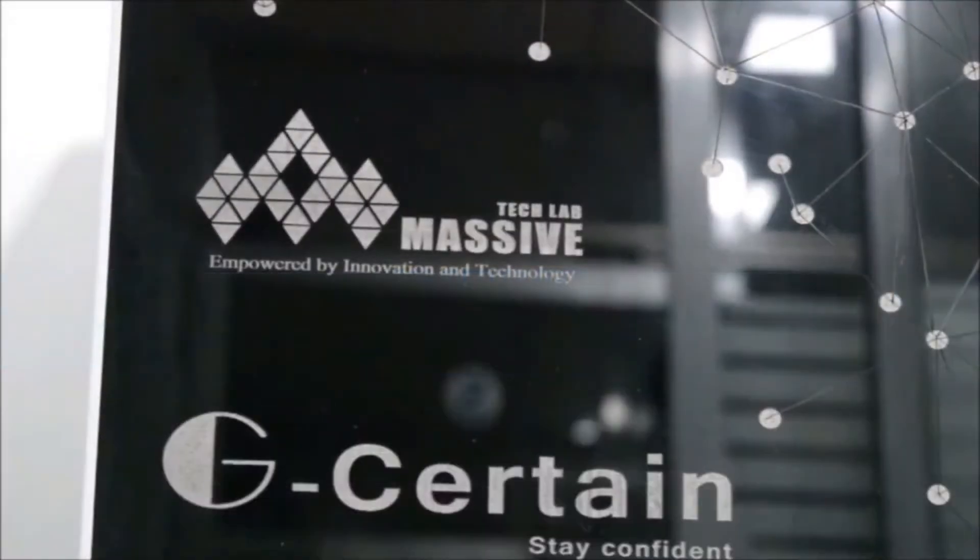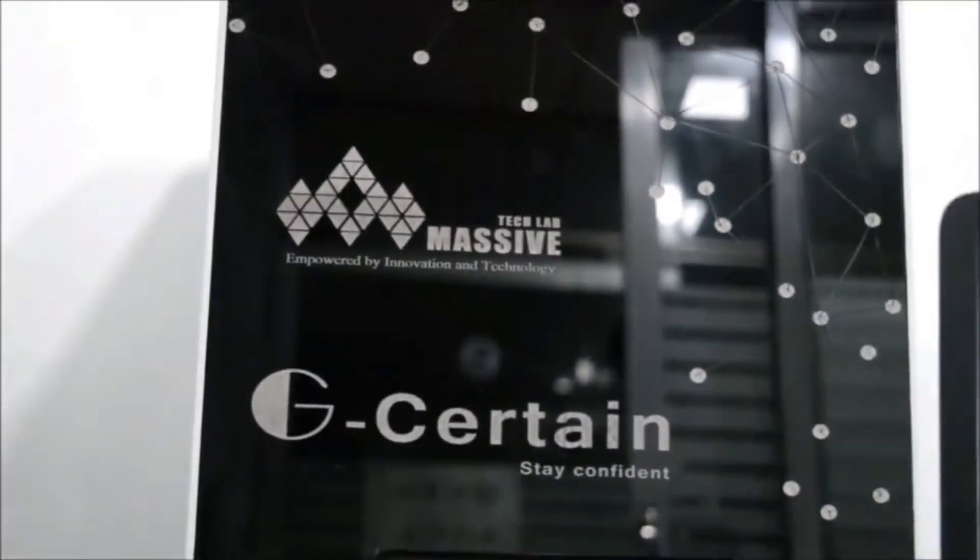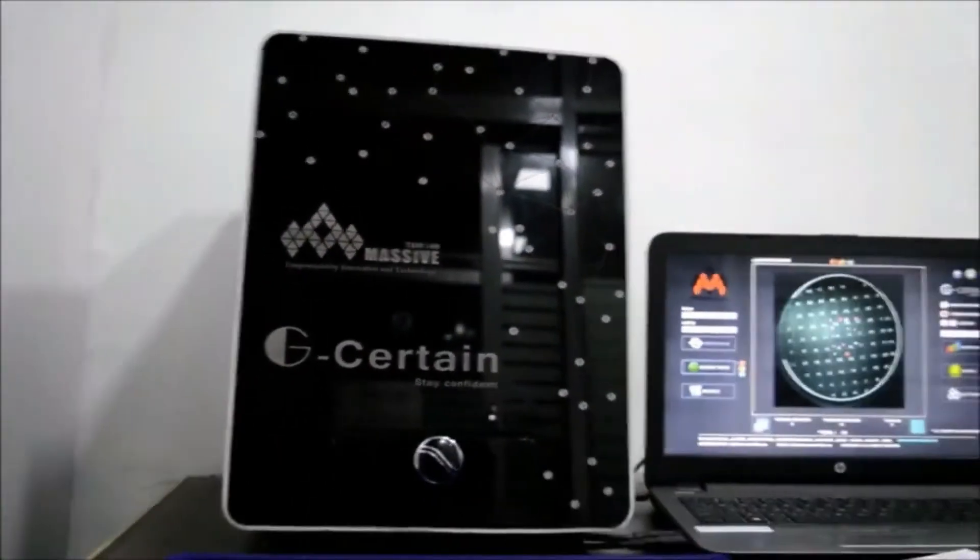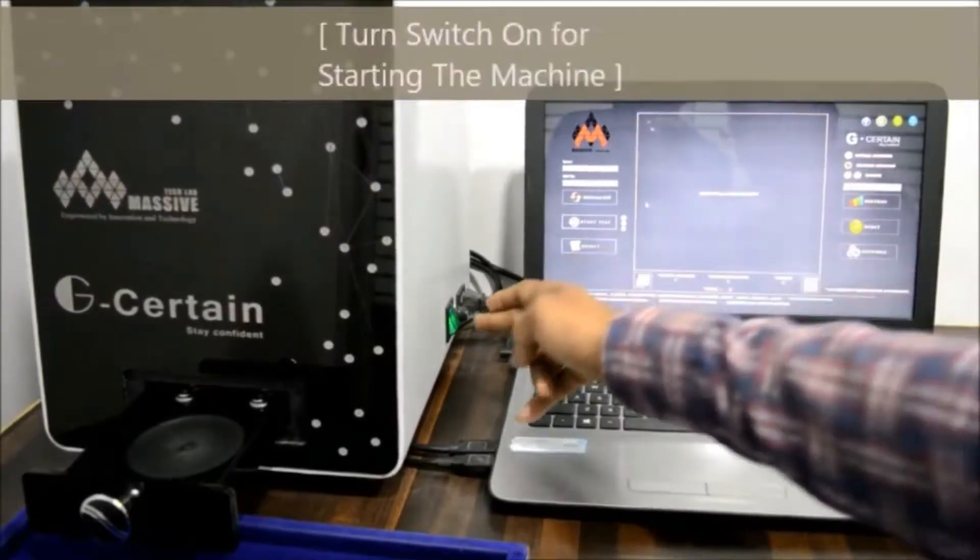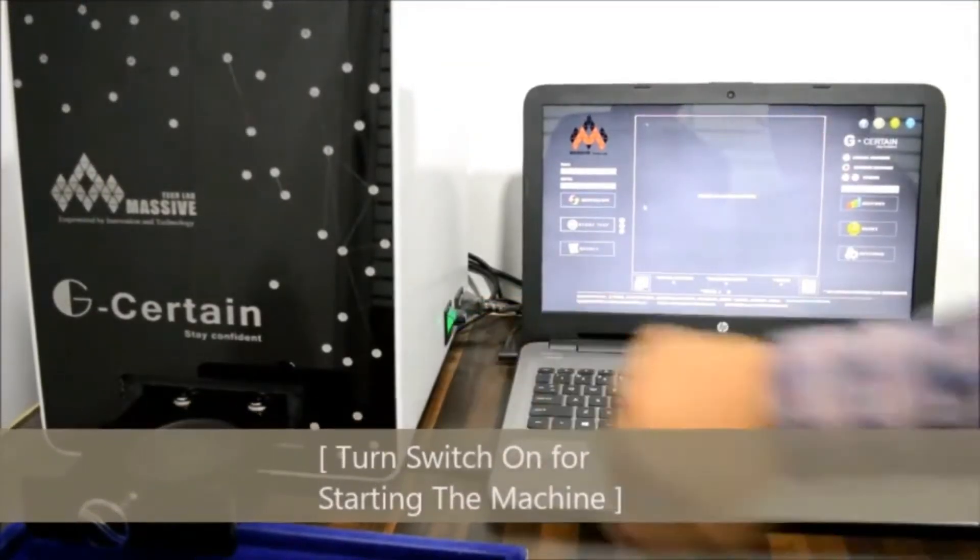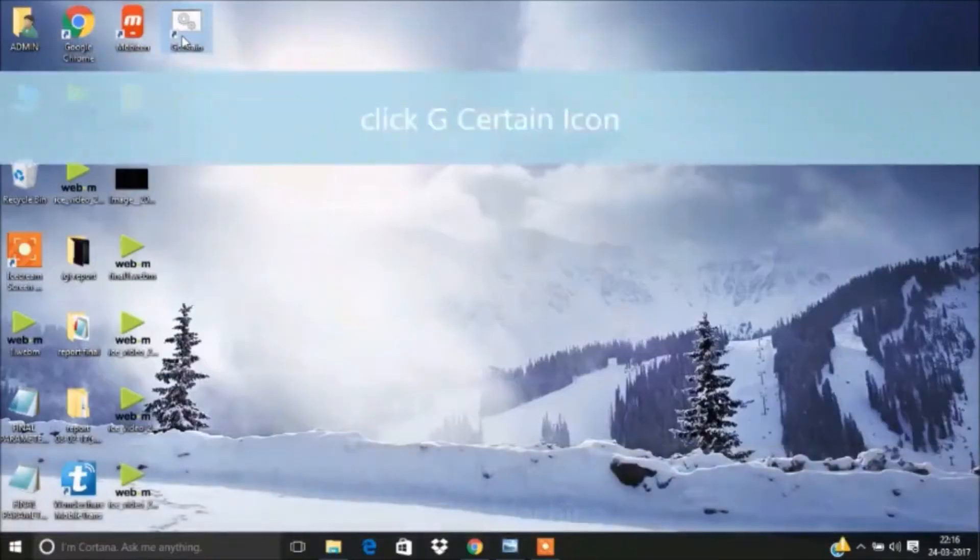Power on the machine to proceed with machine operation, followed by double clicking on G Certain icon.